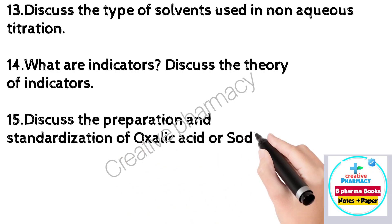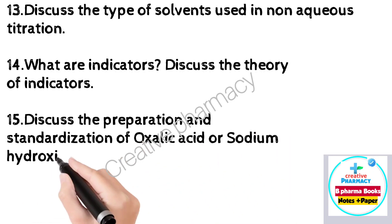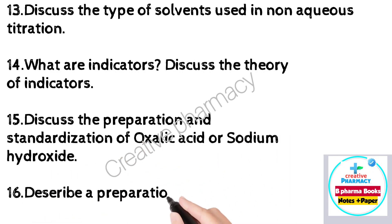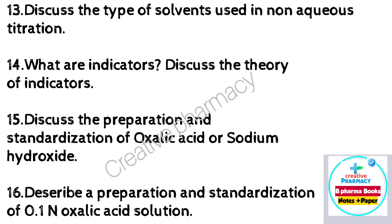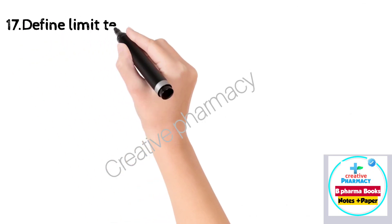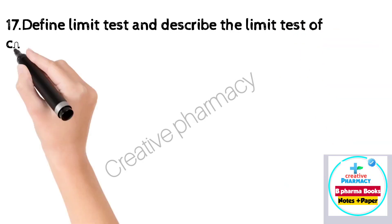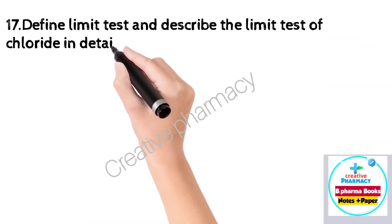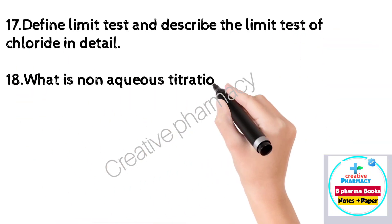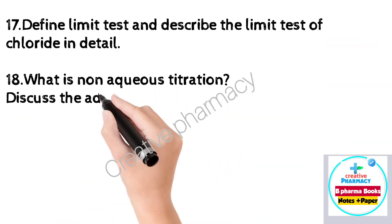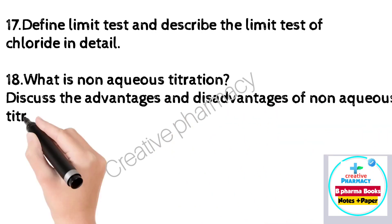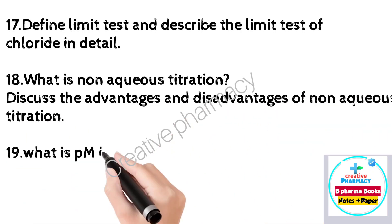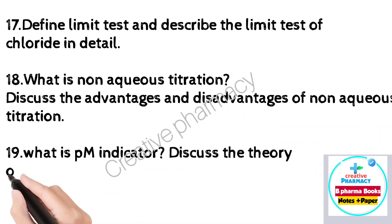Question 13: Discuss the preparation and standardization of oxalic acid or sodium hydroxide. Question 14: Describe the preparation and standardization of 0.1 N oxalic acid solution. Question 15: Define limit test and describe the limit test of chloride in detail. Question 16 and 17: What is non-aqueous titration? Discuss the advantages and disadvantages of non-aqueous titration. Question 18: What is PM indicator? Discuss the theory of PM indicator.